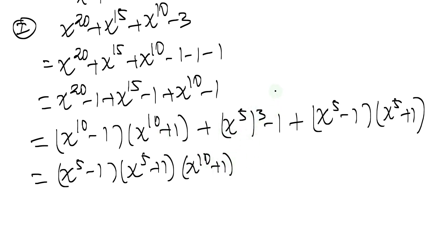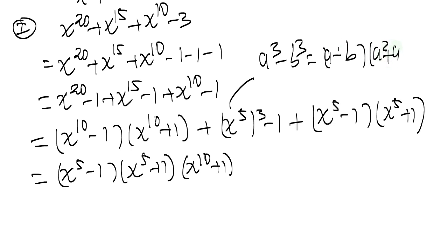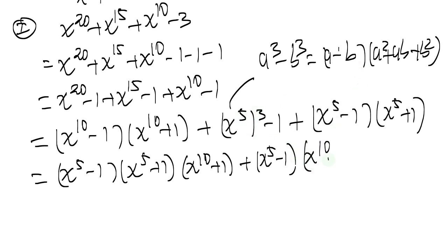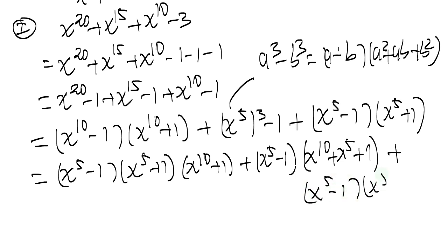For x to the 15 minus 1, we can also apply the difference of cubes formula: a cubed minus b cubed equals (a minus b)(a squared plus ab plus b squared). So x to the 15 minus 1 gives us (x to the 5 minus 1) times (x to the 10 plus x to the 5 plus 1). And for x to the 10 minus 1, that is (x to the 5 minus 1)(x to the 5 plus 1).